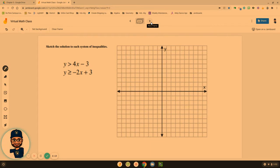So here's an example. Sketch the solution to this system. Y is greater than 4x minus 3. Y is greater than or equal to negative 2x plus 3. And so, step one, graph one of these. Doesn't matter which one, we're going to graph one of them. So I'm going to choose this one to be in blue. And we're going to graph this one first.